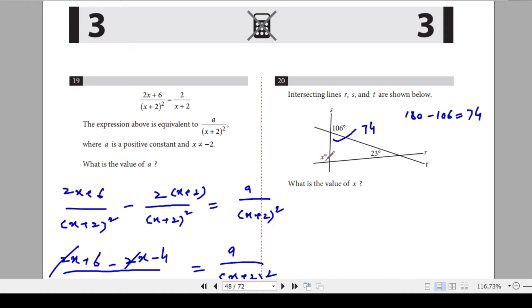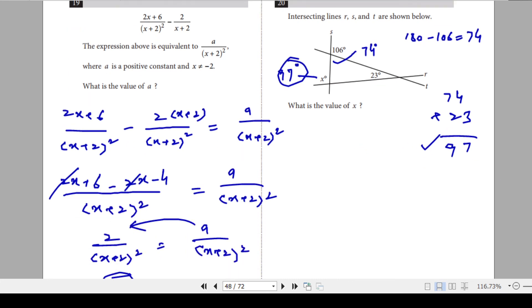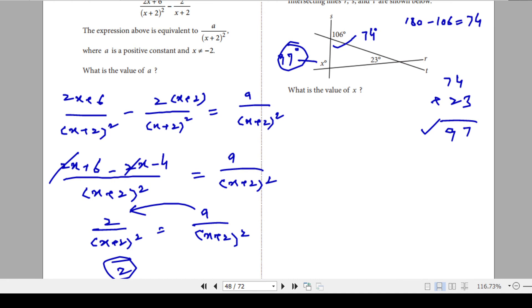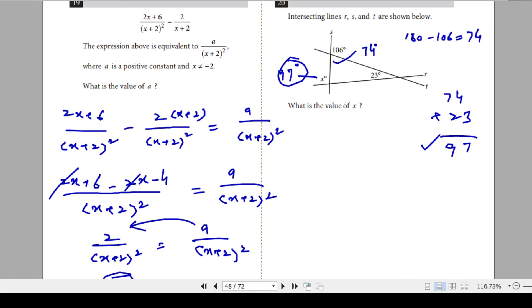And this angle x is the sum of these two remote interior angles. That's the thing we have studied in angles and triangles. So this is the sum of 74 degrees and 23 degrees. 74 plus 23 is 97. So this x is 97 degrees. You don't need to write degree there. You just need to write 97. That's your answer.